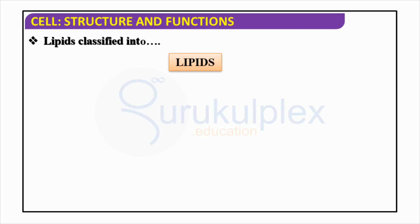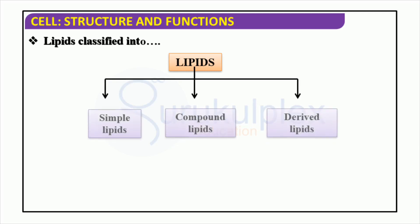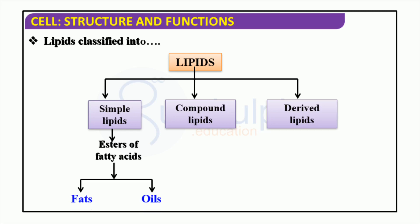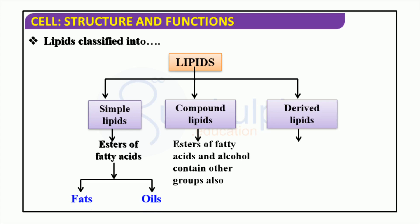Lipids are an important type of biomolecule that form the foundation of life. They are classified into four main types: simple lipids, compound lipids, derived lipids, and esters of fatty acids. Each type of lipid contains hydrocarbon rings and a long hydrocarbon side chain. Their primary role is to help create and sustain a stable internal environment for cells.